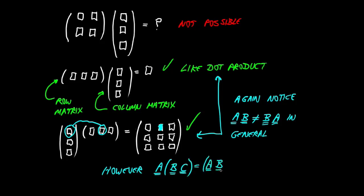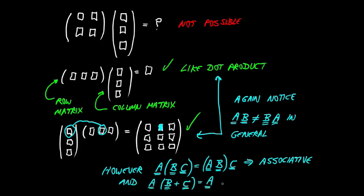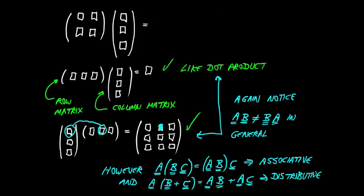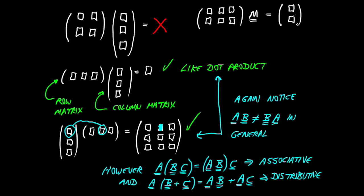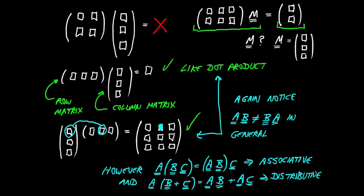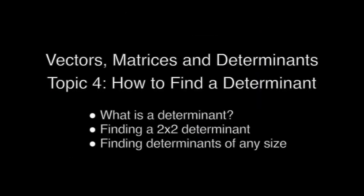In summary: A×B is generally not equal to B×A for matrices. Even if both exist, they may not be the same shape. However, matrix multiplication does satisfy the associative property: A(BC) = (AB)C. And the distributive property: A(B+C) = AB + AC. So matrix multiplication has associative and distributive properties, but is not commutative. That's the end of this video.